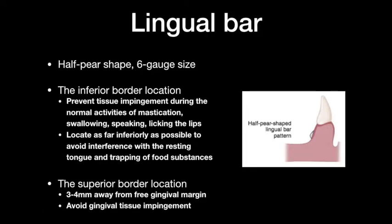The lingual bar, in cross-section, looks like a half-pear shape, and its size is six gauge. When placing the lingual bar, we need to notify where to put the inferior and superior borders. The inferior border should prevent tissue impingement during mastication, swallowing, speaking, or licking the lips, and should be located as far inferior as possible to avoid interference with the resting tongue and trapping of food. The superior border should be three to four millimeters away from the free gingival margin to prevent gingival tissue impingement.